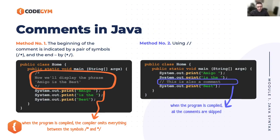There are two ways to add comments. The first way, if you want to add one line of comments, would be the double slashes. Or you can add a slash-star to add multiple lines, especially if you have a lot of comments to add.